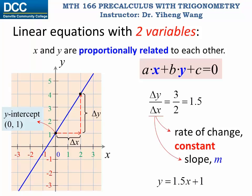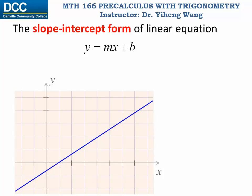It can be rewritten into the general form, to be 1.5x minus y plus 1 equals to 0, but let's keep it this way for now. This is because it is known as the convenient slope-intercept form of linear equation. From this form, we can easily tell the slope of the equation, and also we can tell where the line intercepts with the y axis.